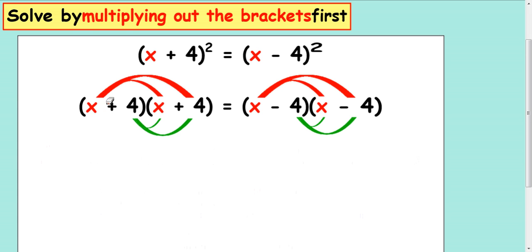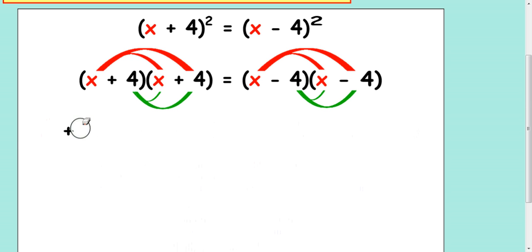So let's start on this side, on the left hand side. x times x is x squared, x times 4 is 4x. Then start with the 4. 4 times x is 4x, and 4 4s are 16. Again on this side, x times x is x squared, x times negative 4 is negative 4x, negative 4 times x is negative 4x. And finally, negative 4 times negative 4. Signs are the same, so it's a plus 16 at the end.